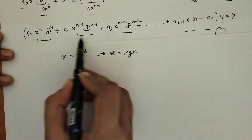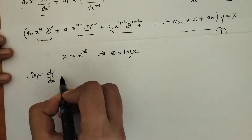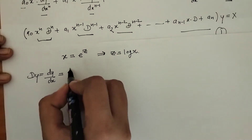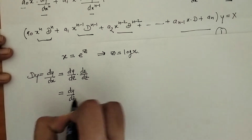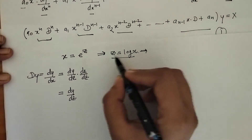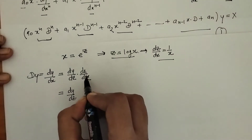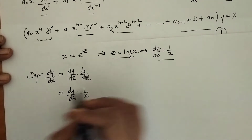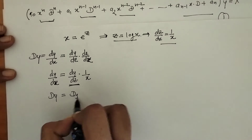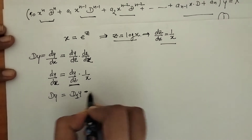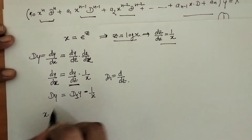From this substitution we get z equals log x. Now we find the value of the operator. By the chain rule we can write dy/dx as dy/dz times dz/dx. Since z equals log x, dz/dx equals 1 upon x. Substituting, we get dy/dx equals (1/x) times D1 y, where D1 denotes d/dz. So we get x times D equals D1, meaning xD = D1.